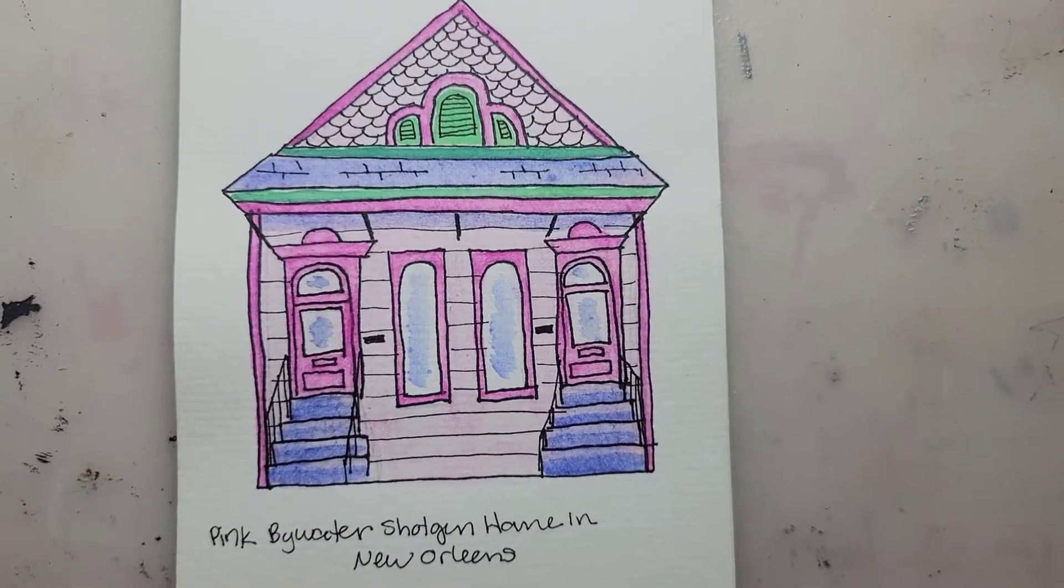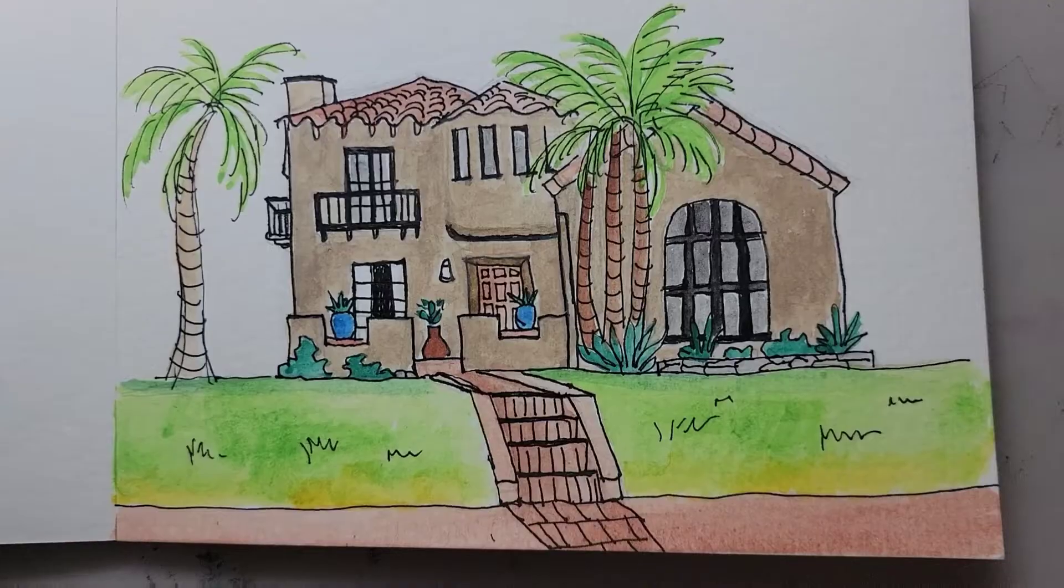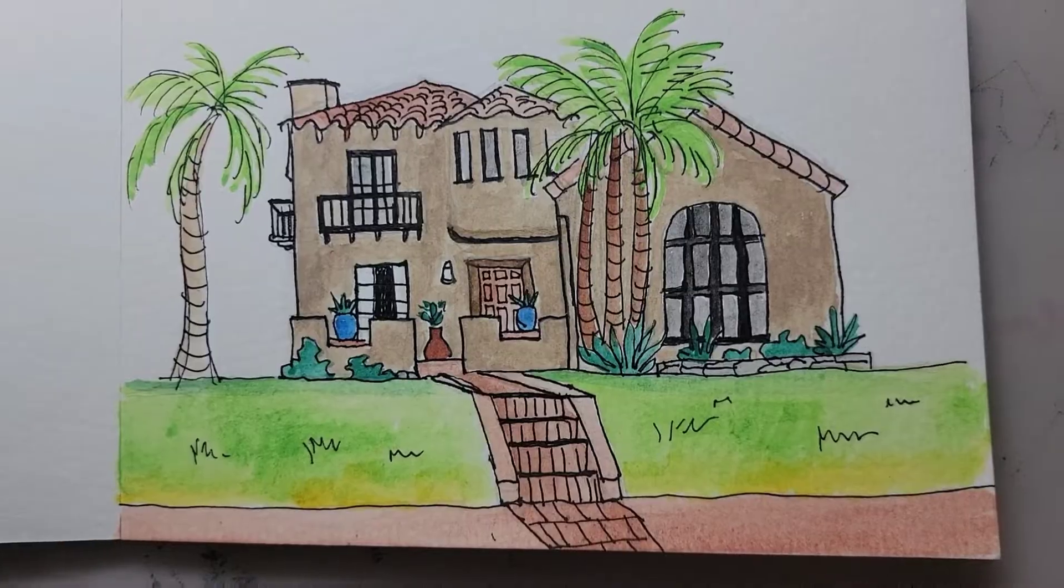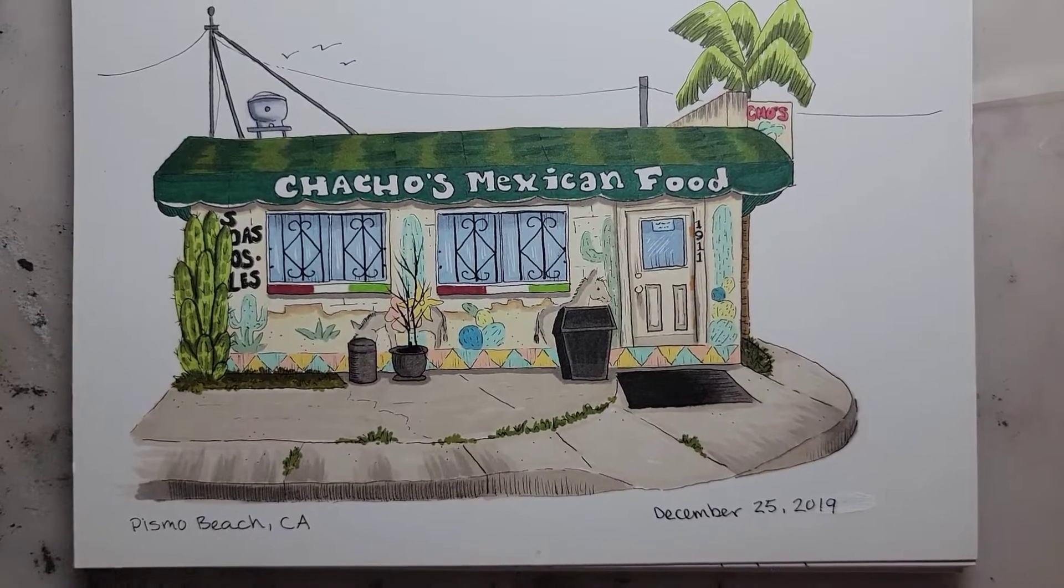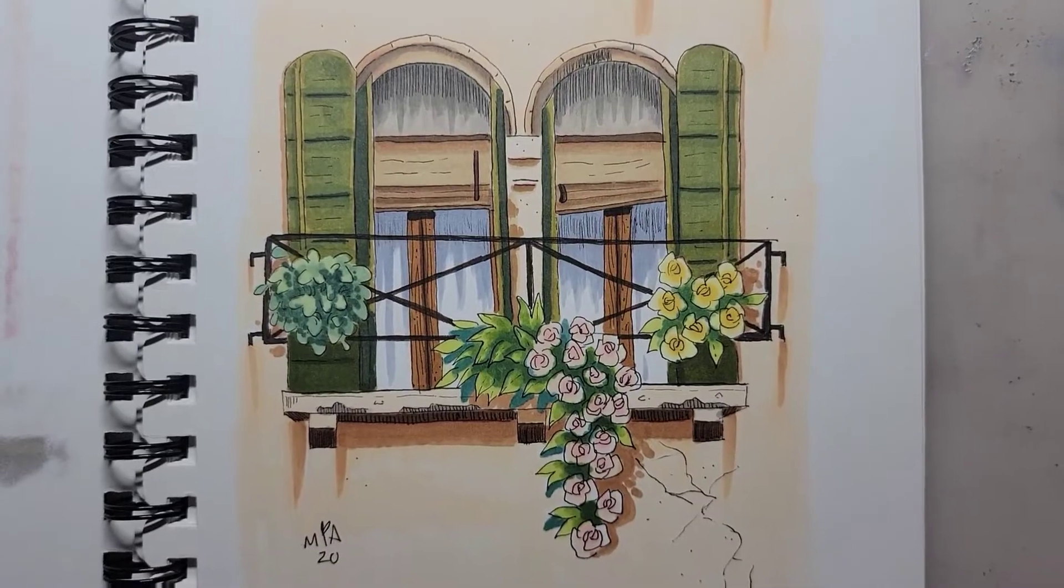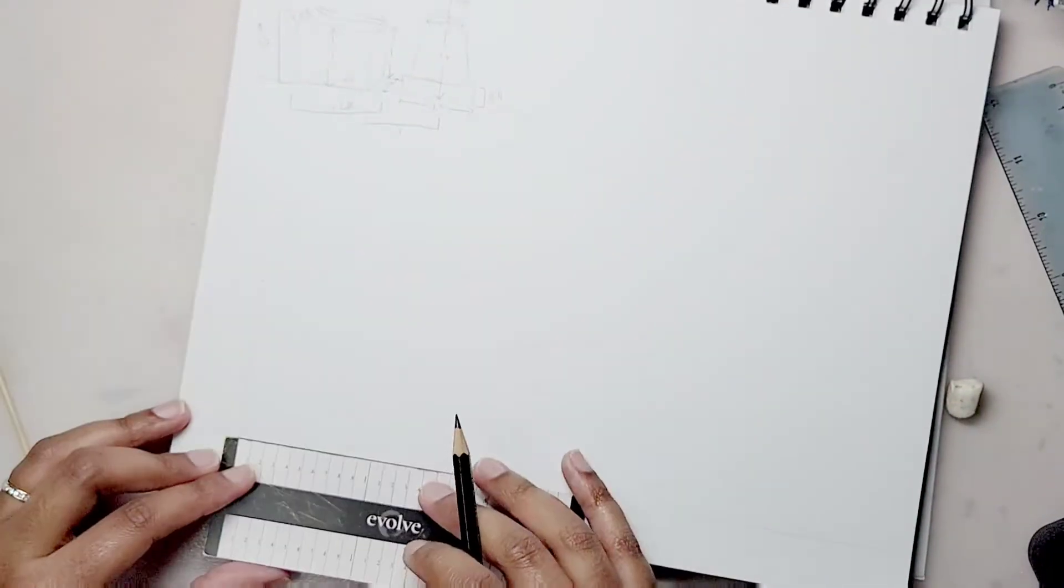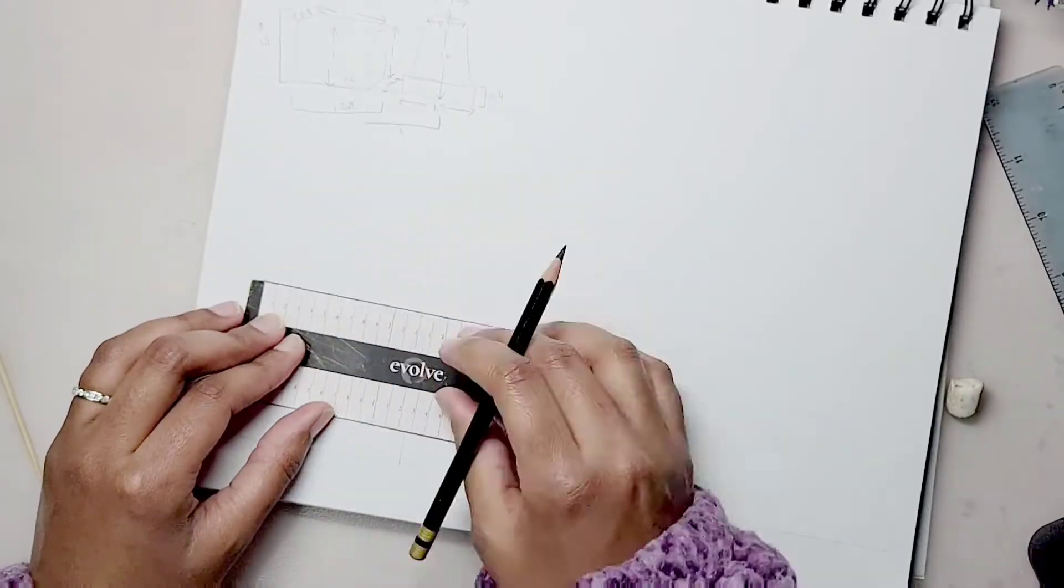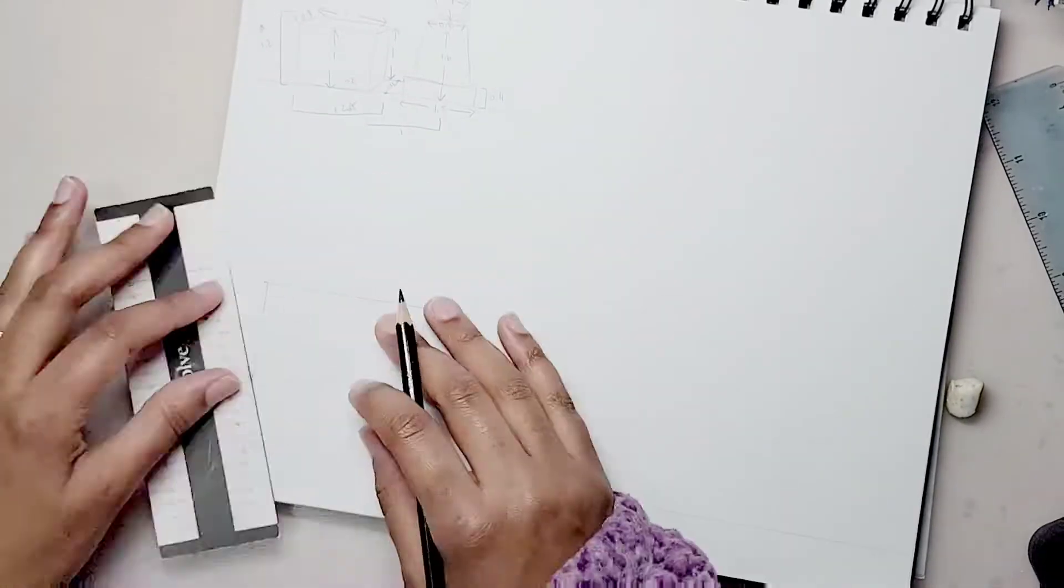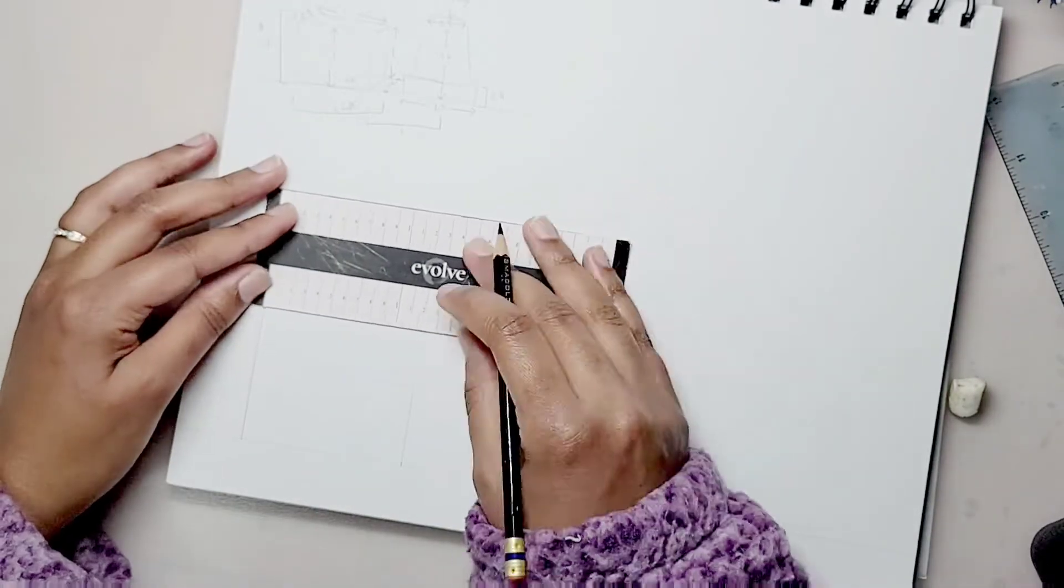I went from drawing buildings that look like this to looking like this. For once in my life my houses didn't look lopsided, the windows and doors all fit. Proportional drawing definitely made a big difference when drawing buildings.